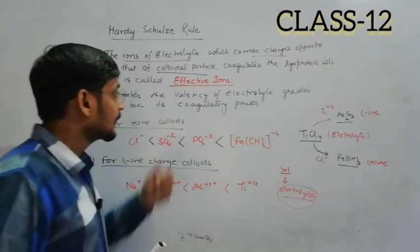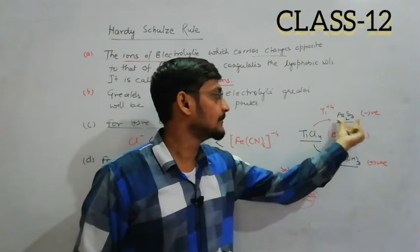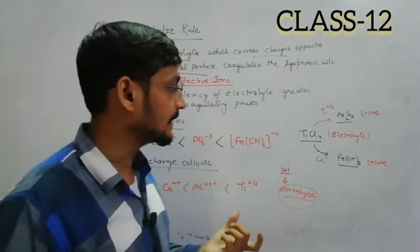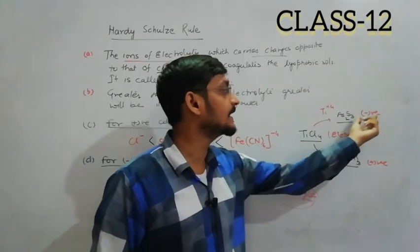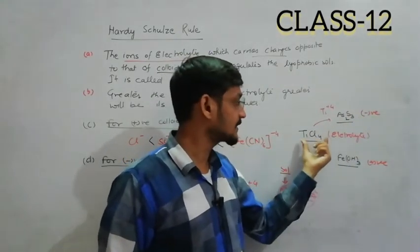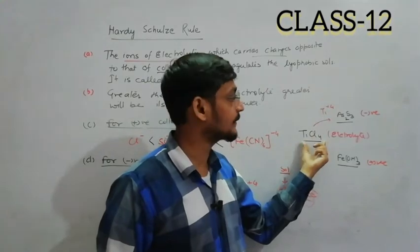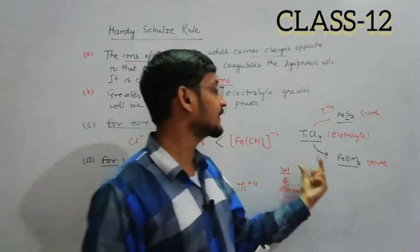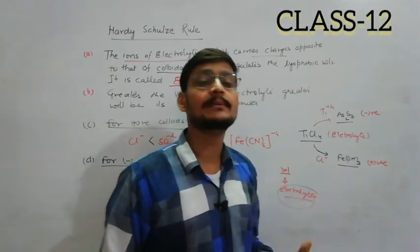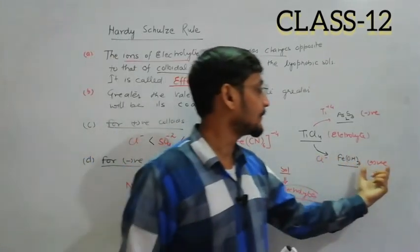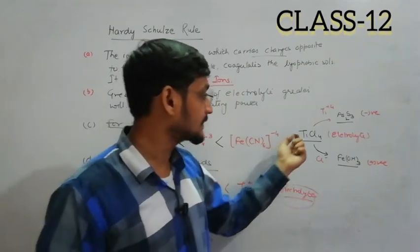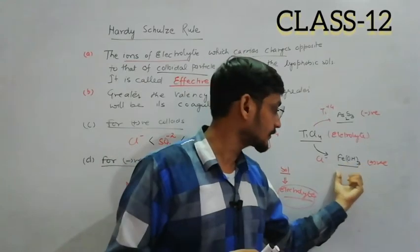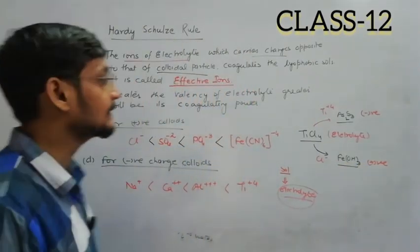Here we have explained that if we have AS2S3 which is negatively charged colloid, and we add TiCl4, then Ti plus 4 positive ion is responsible for coagulation. If TiCl4 is added to ferric oxide sol which is positively charged colloid, then Cl minus is responsible for coagulation.